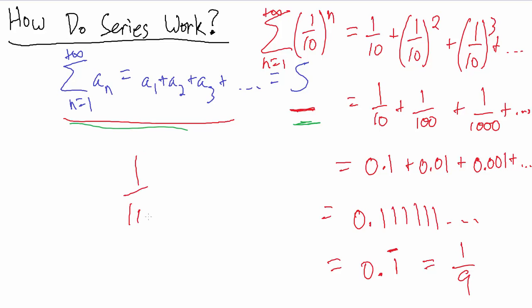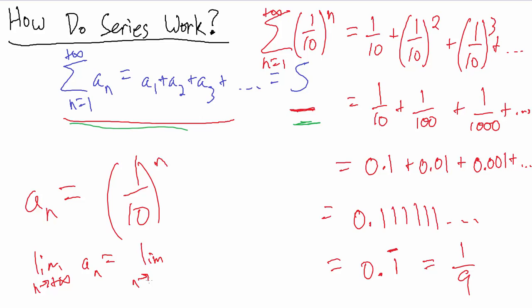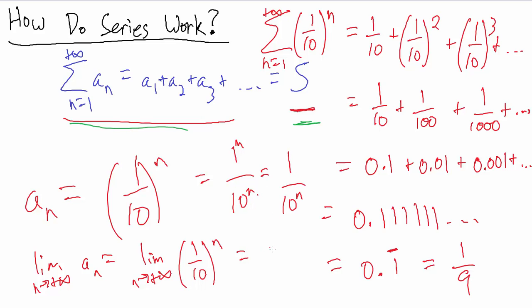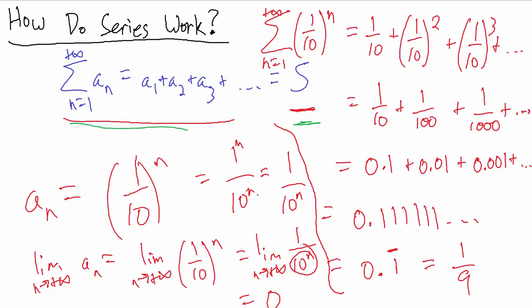Notice that one-tenth to the n is our a sub n. The limit as n goes to positive infinity of a sub n equals the limit as n goes to positive infinity of one-tenth to the n. We can rewrite one-tenth to the n as one to the n over ten to the n. One to the n is just one, so this is the limit of one over ten to the n as n goes to positive infinity, which is just zero — because as n gets infinitely large, ten to the n also gets infinitely large very quickly, while one stays fixed.